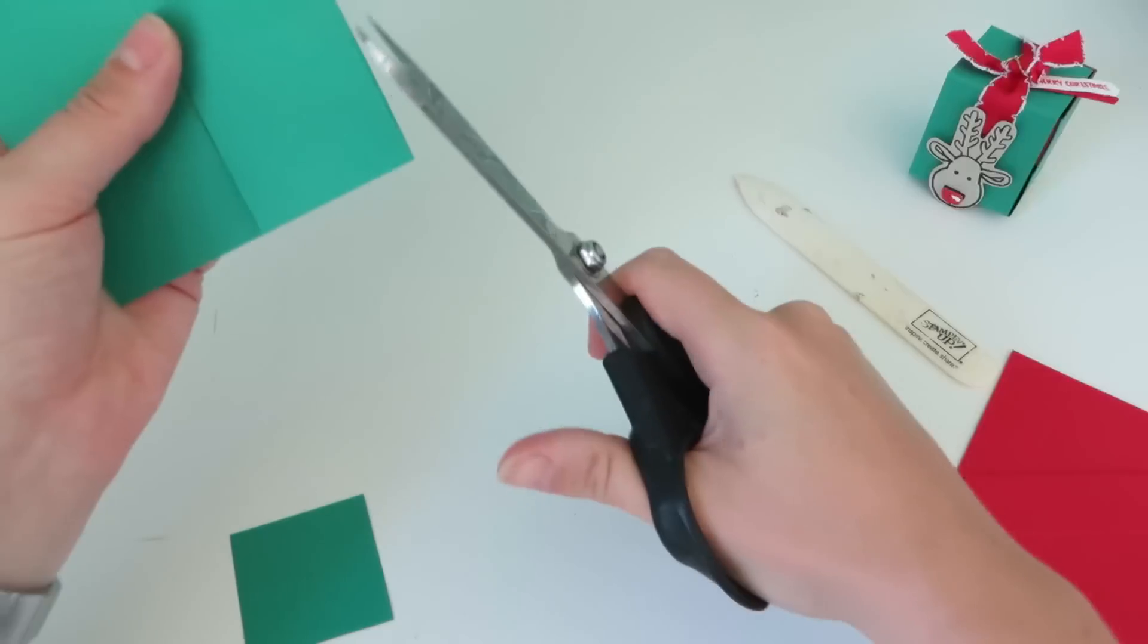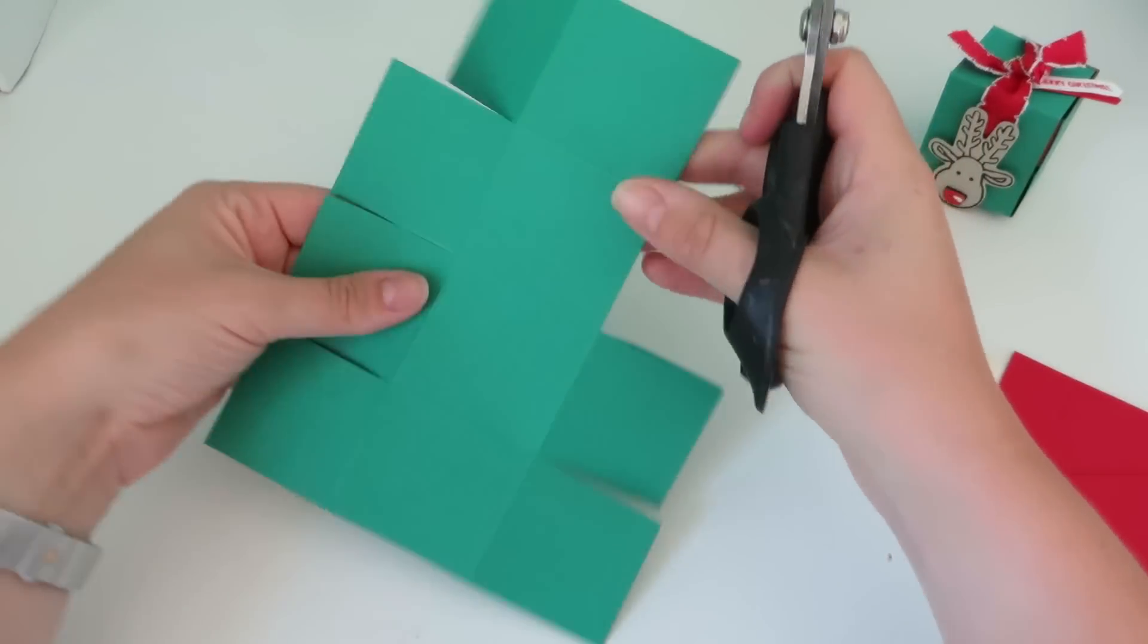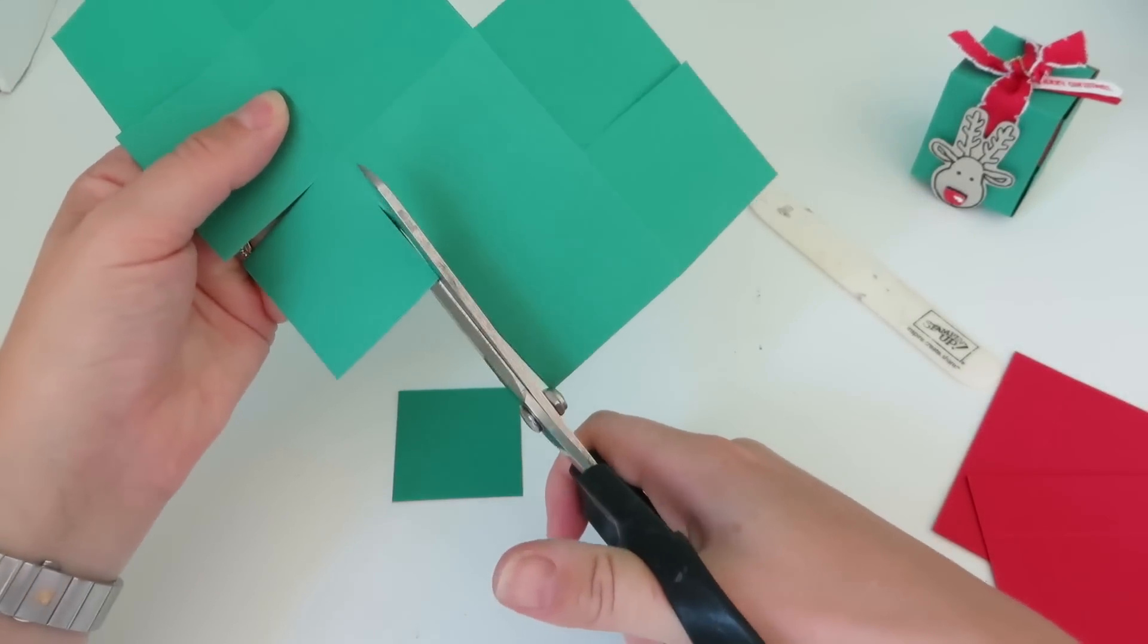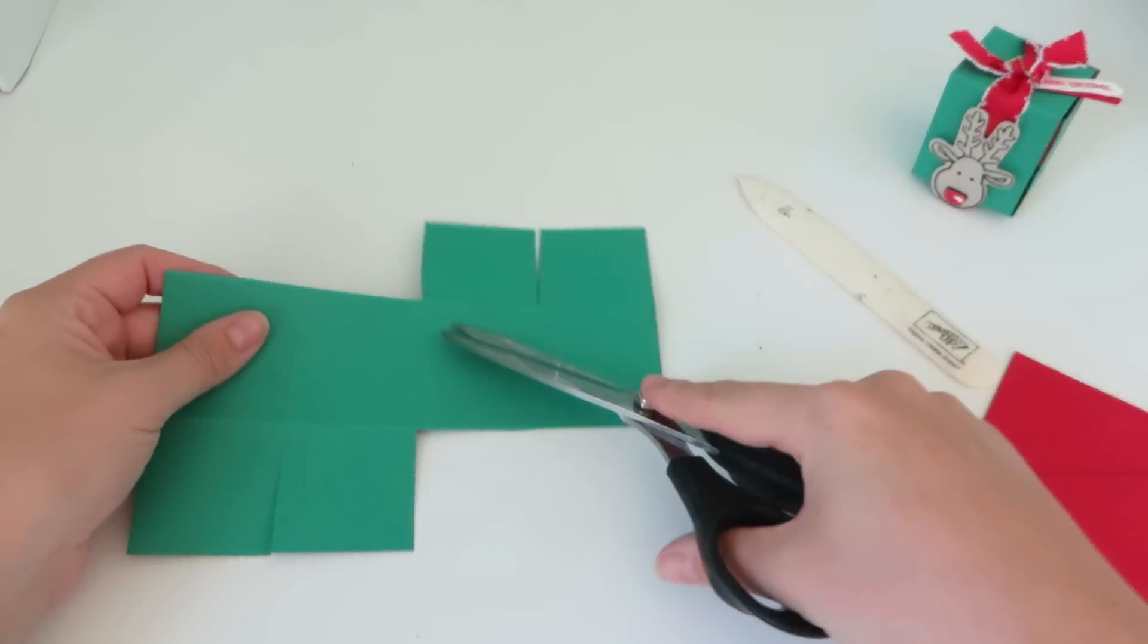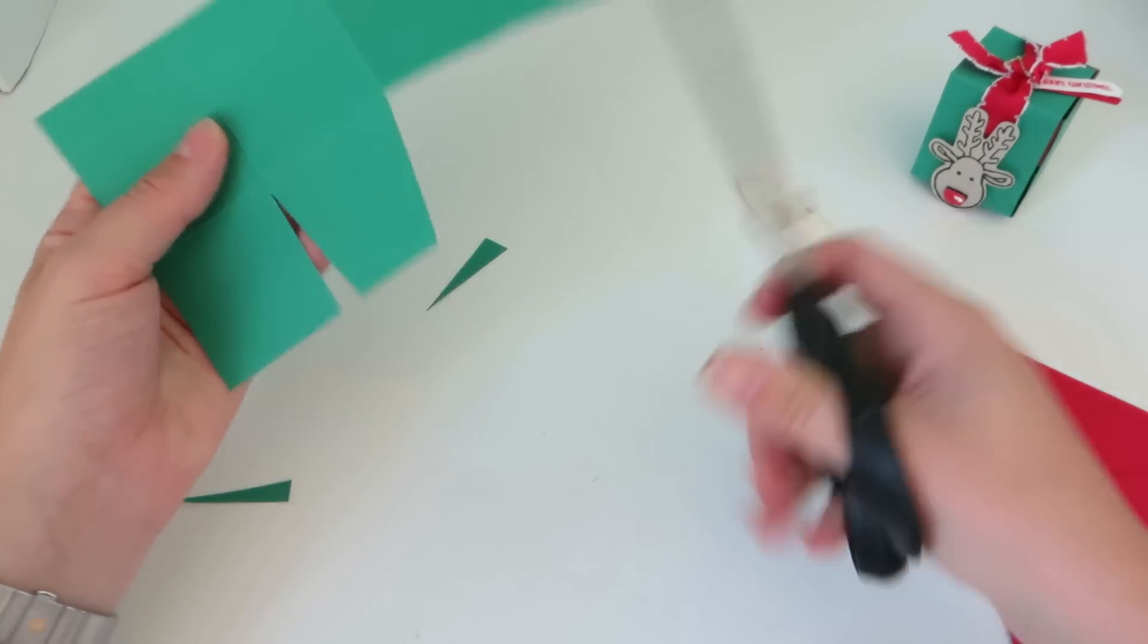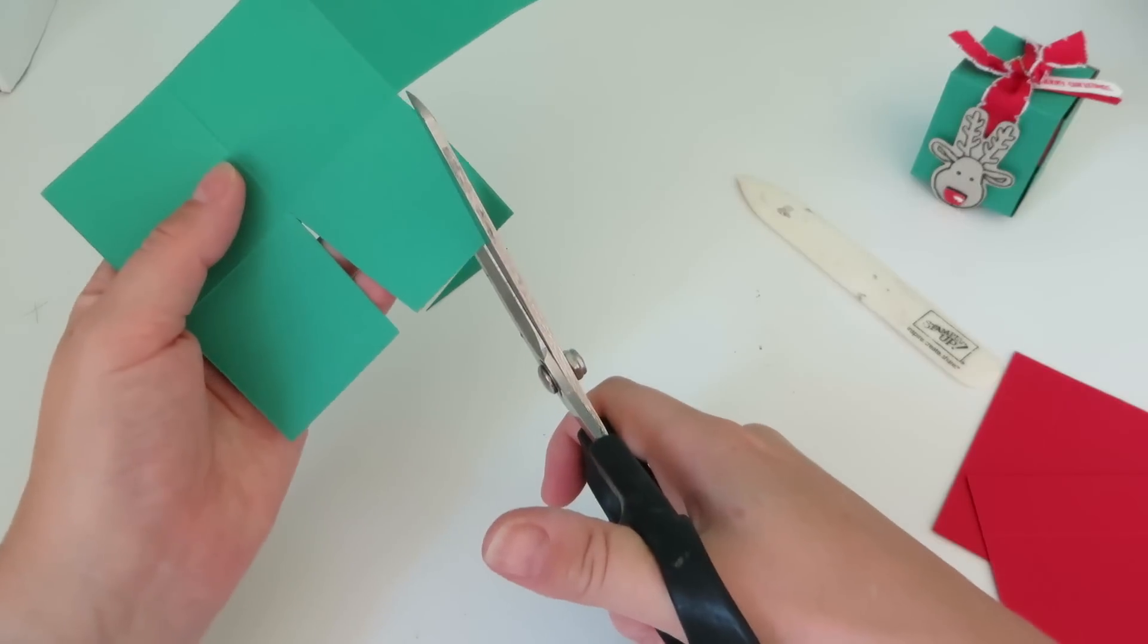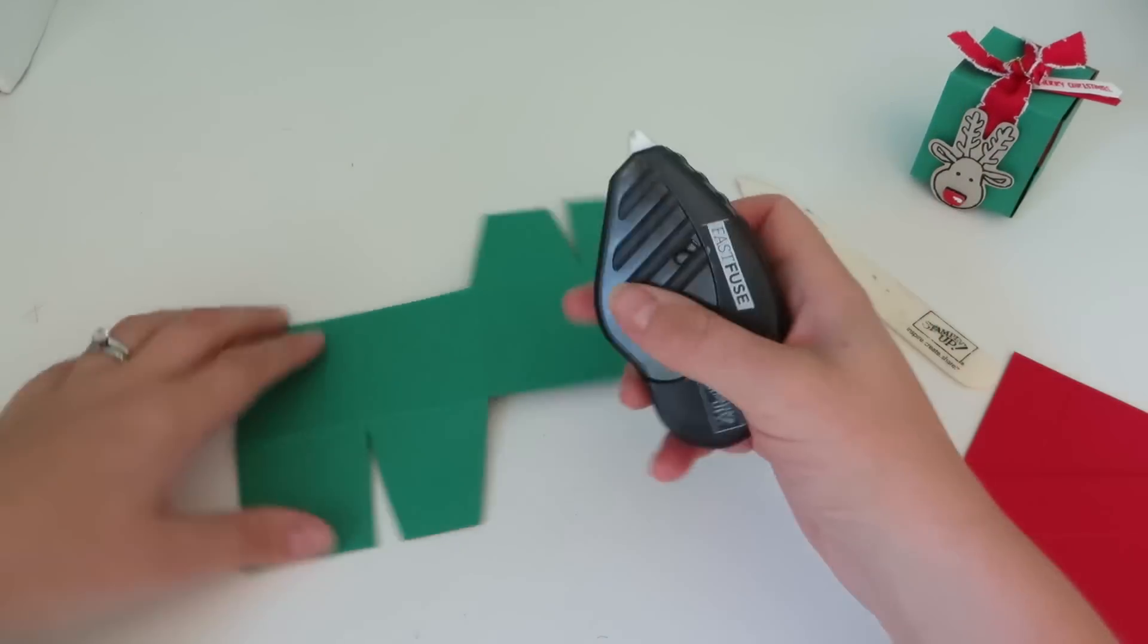And then on the other side, you want to cut off the opposite two flaps. Then we want to take the square that's closest to the middle and just notch that one out again on both of your sides. Then it's very easy to fold this up.